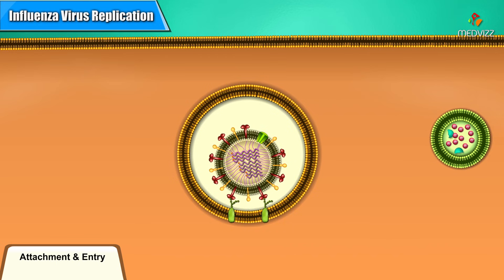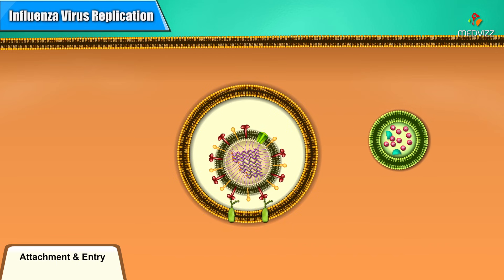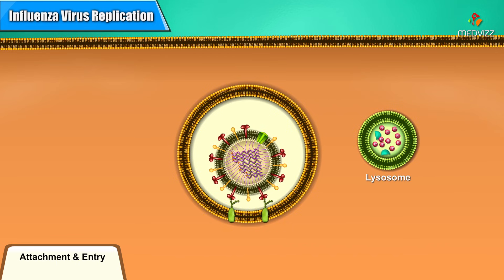The endocytic vesicle then fuses with a lysosome. A lysosome contains digestive enzymes and an acidic interior, and typically digests contents taken in from outside the cell.